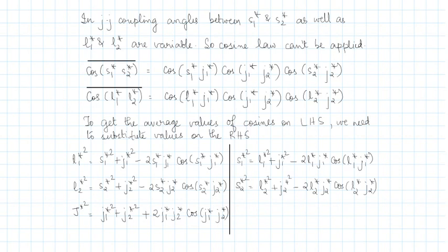We have written five relations involving cosines of the angles mentioned. You can obtain substitutions for every cosine mentioned on the right-hand side of this equation.